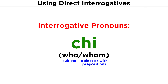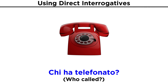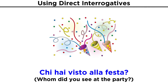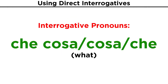Here are some examples with chi. Now that we know how to ask who, how do we ask what? For this we typically use che cosa, but we can also use cosa or che. Surprisingly, these all mean the same thing, and just like chi, they can be used as a subject or object.